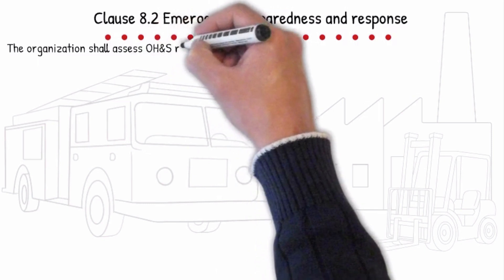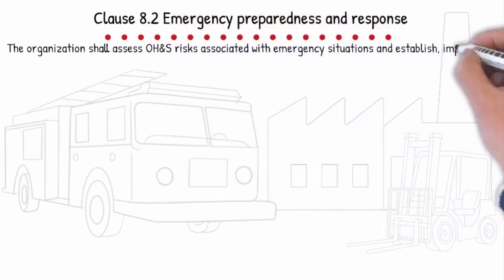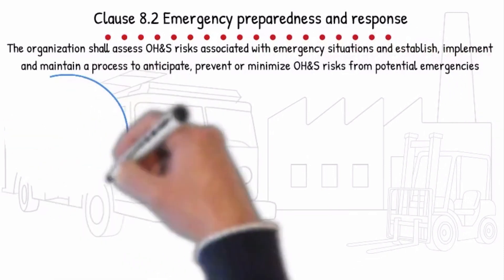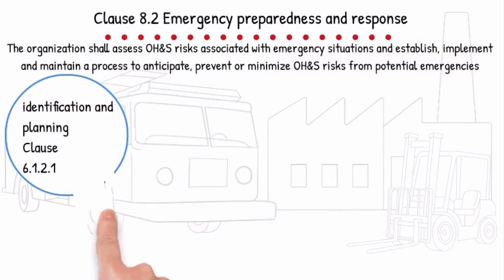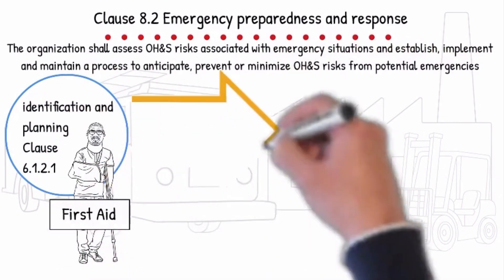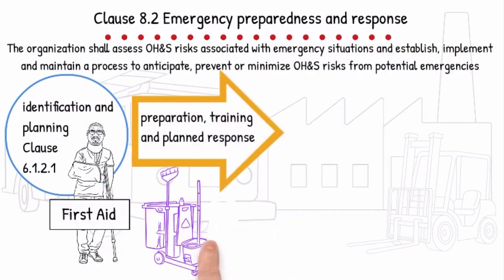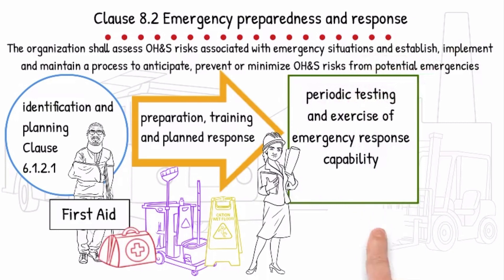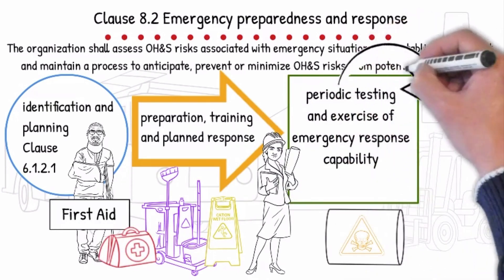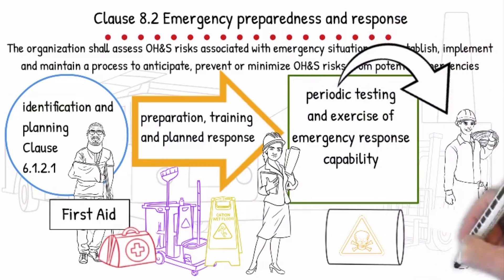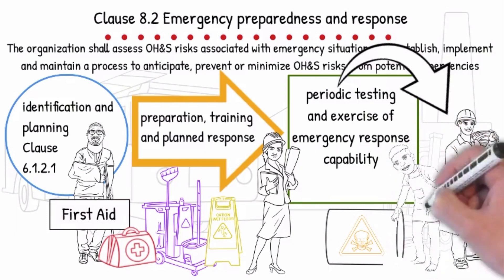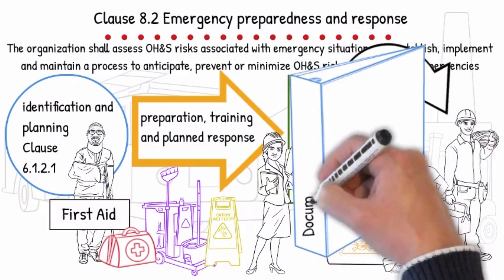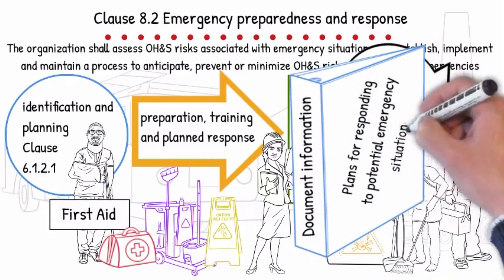The organization shall assess OH&S risks associated with emergency situations and establish, implement and maintain a process to anticipate, prevent or minimize OH&S risks from potential emergencies. This includes identification and planning, including provision for first aid; preparation of a plan response; periodic testing and exercise of emergency response capability; communicating relevant information to all workers on their duties and responsibilities, and to contractors, visitors, emergency services, government authorities and the local community. The company shall maintain and retain documented information of the plans for responding to potential emergency situations.